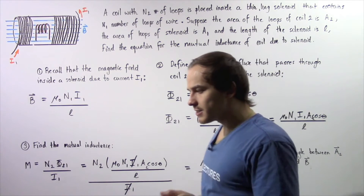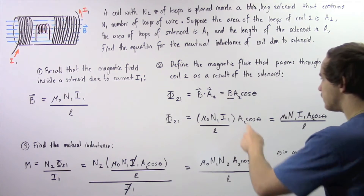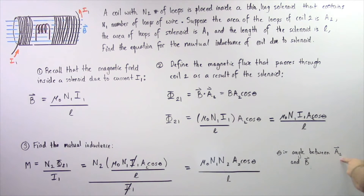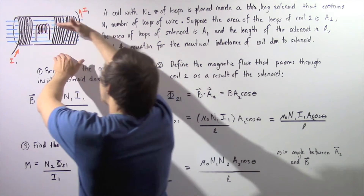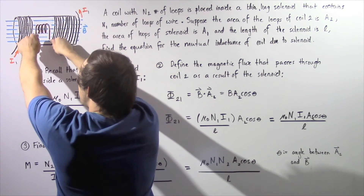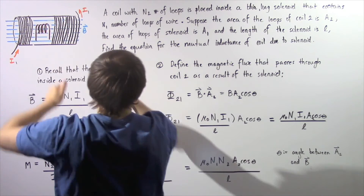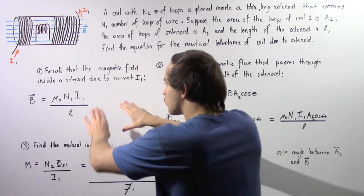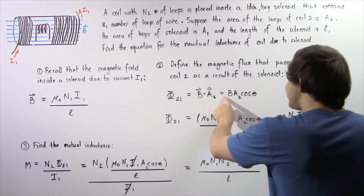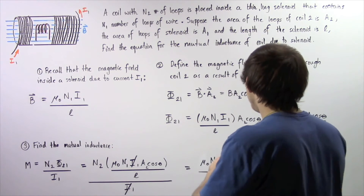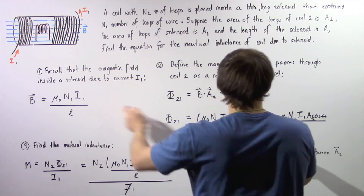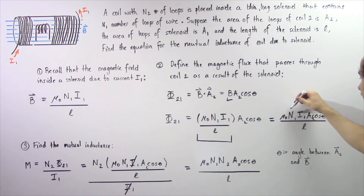By definition of the dot product, the dot product of two vectors equals the product of their magnitudes multiplied by cosine θ, where θ is the angle between the area vector A2 and the magnetic field B. As described in the diagram, the angle for this case is 0, but if we rotate coil number 2 the angle might change. Substituting the equation for B from step 1, we get: Φ₂₁ = μ₀ · N1 · I1 · A2 · cosθ / L.